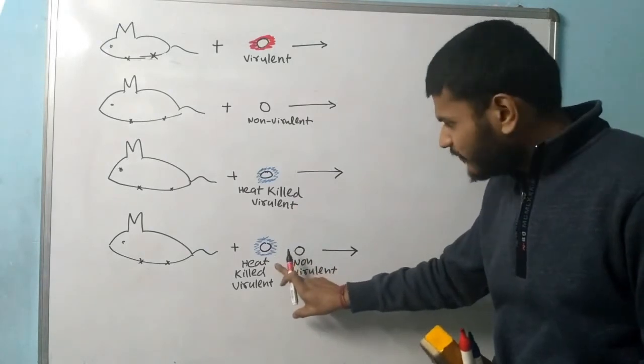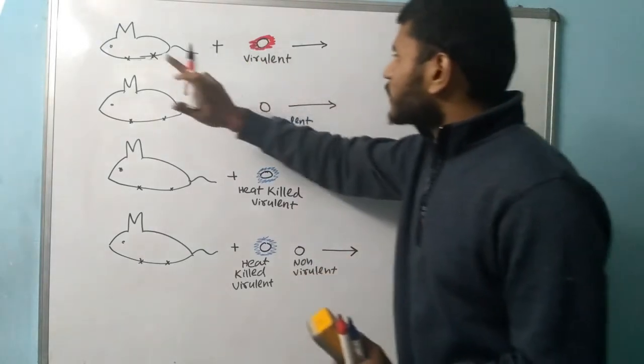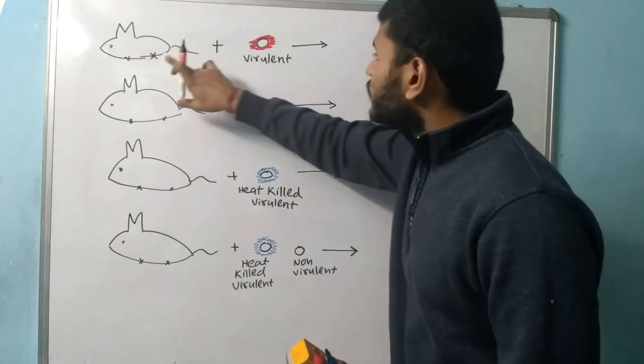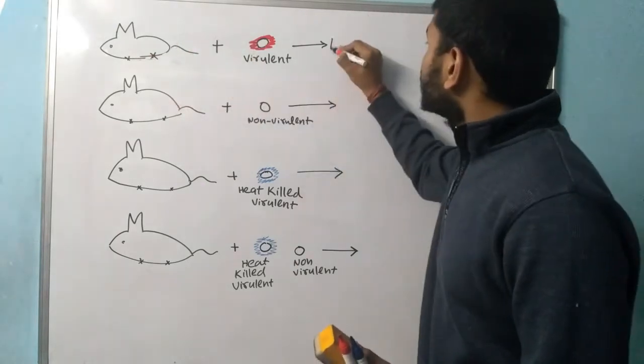In the first experiment when the virulent form is inserted in the mouse, the mouse is dead.